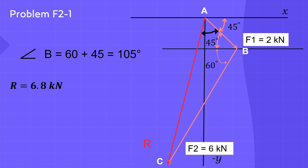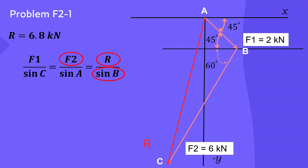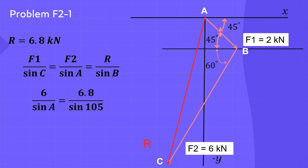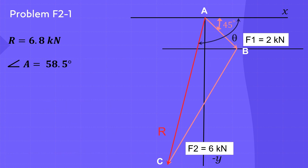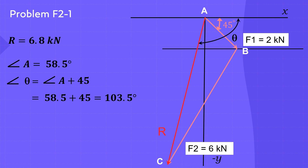To find the measure of angle A we can use the sine law. We know the values of R, angle B, and F2. So 6 divided by sine A equals 6.8 divided by sine 105. After rearrangement, sine A equals 6 multiplied by sine 105 divided by 6.8, equals 0.853. So the measure of angle A equals sine inverse of 0.853, equals 58.5 degrees. The direction of the resultant force R measured clockwise from the x-axis is represented by angle theta, where theta equals angle A plus 45, equals 58.5 plus 45, equal to 103.5 degrees.